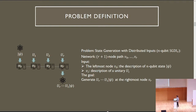We consider the problem we call state generation with distributed inputs, or the N-qubit SGDI problem. We consider a network of R plus one node path. The input to the leftmost node is the classical description of quantum state psi, and the input to the other nodes is some unitary transformation. The goal is to generate the state UR to U1 psi at the rightmost node, BR.